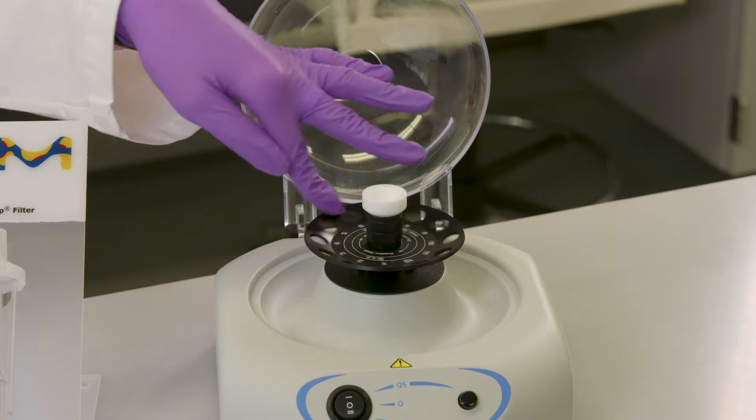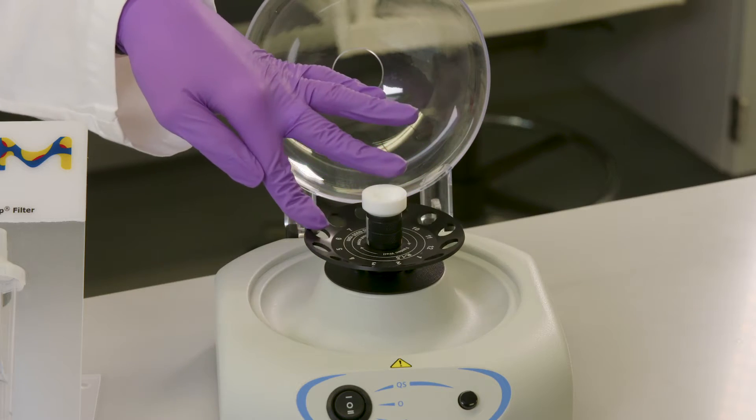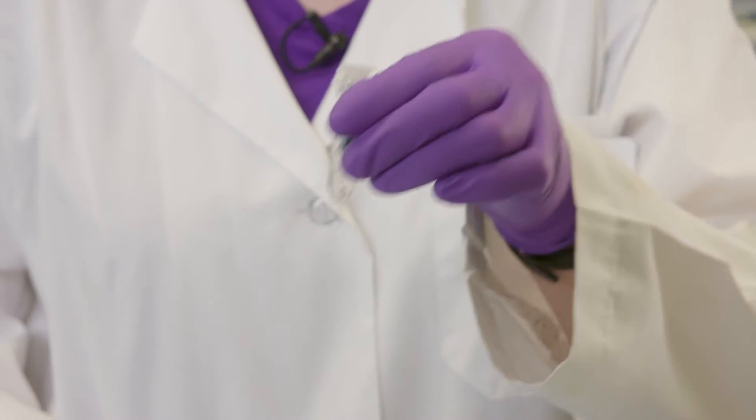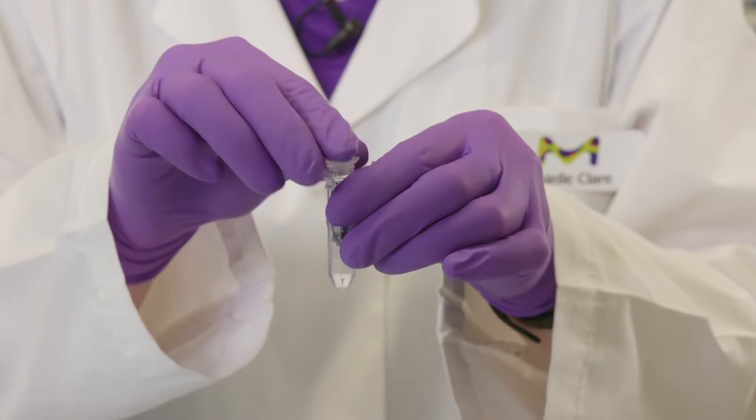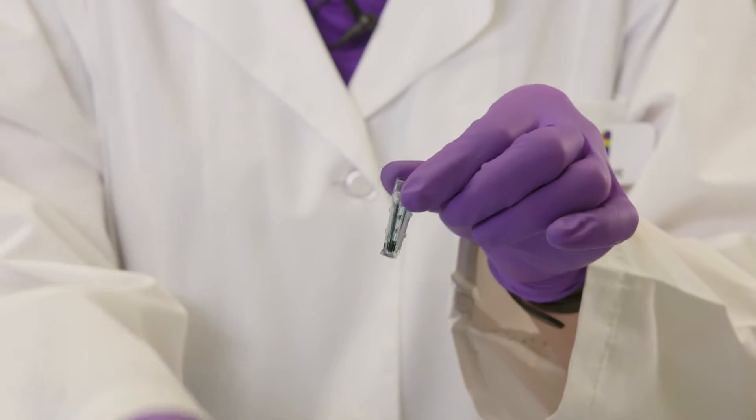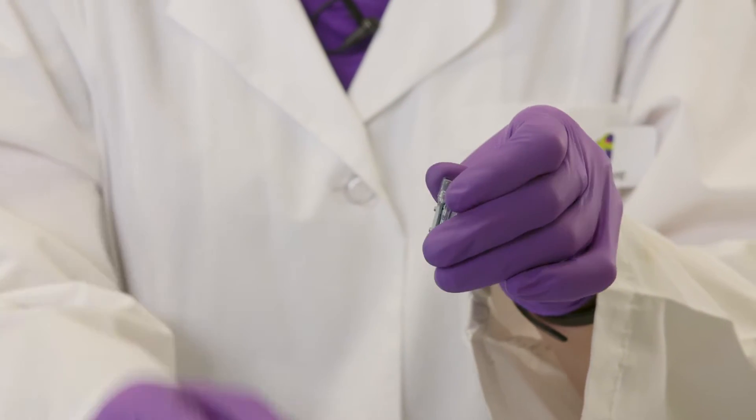Let me say up front that a reverse spin is not reversing the direction of the spinning centrifuge. It simply refers to inverting the concentrator into a collection tube and centrifuging again to get every drop of precious concentrated sample into the collection tube.